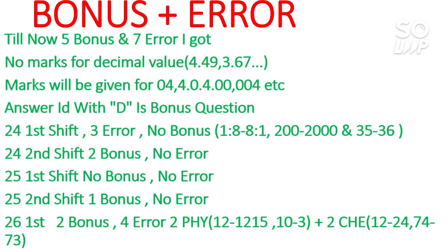The 4 errors in the 26th first shift are 2 in physics and 2 in chemistry. In physics: one question has the right answer 1215, but initially 12 was provided — now corrected to 1215. Another question has the answer 3.33, but since it is integer type it becomes 3; initially 10 was provided — now corrected to 3. In chemistry: one question has the right answer 24, initially provided as 12 — now corrected to 24. Another has the right answer 73, initially provided as 74 — now corrected to 73.